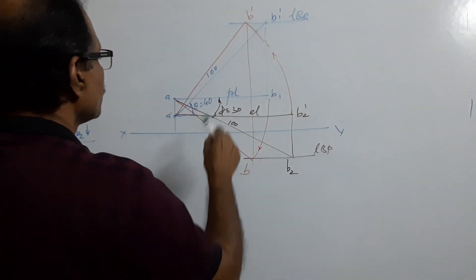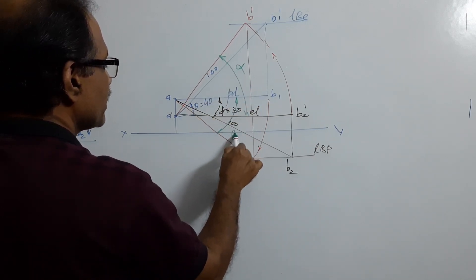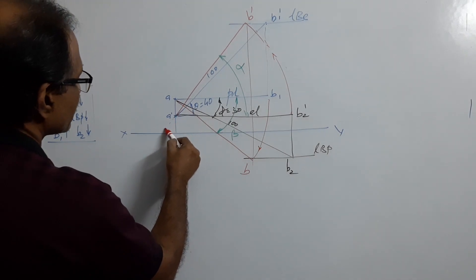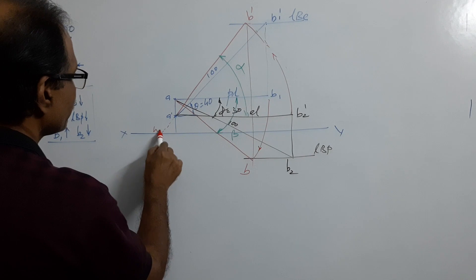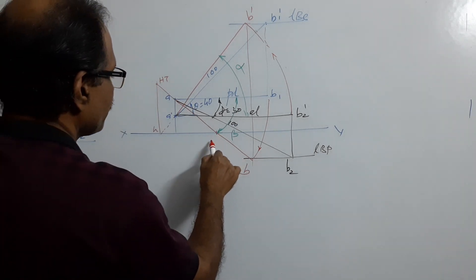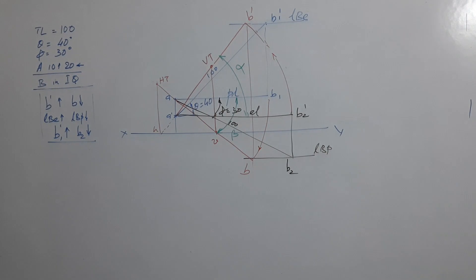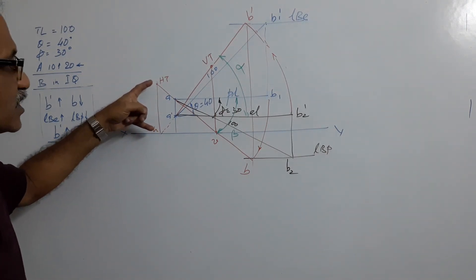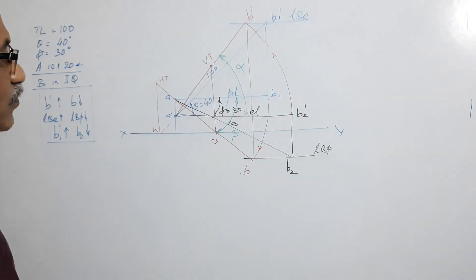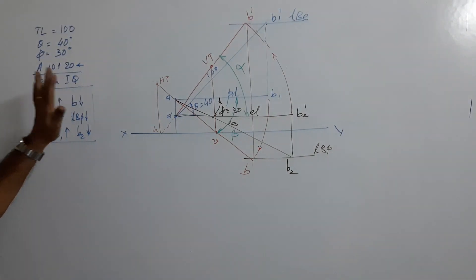This angle is called alpha and this angle is called beta. Now find the traces: the elevation when extended will cut XY at a point — draw a vertical through it and extend the plan; they meet at HT. The plan cuts XY at another point — draw a vertical line through it and it will cut the elevation at VT. Measure and state that HT is such-and-such distance behind VP, and VT is such-and-such distance above HP.